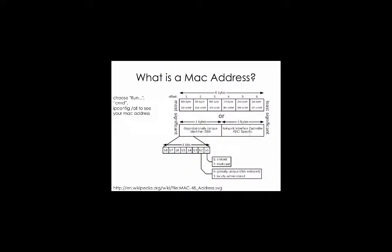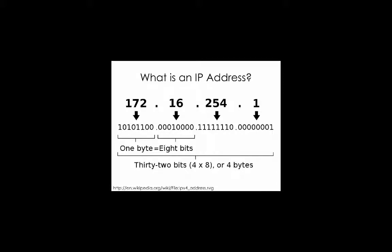Once you get on the internet, the question is how do we find each other? You'll have probably seen things called the MAC address — basically it's a marker for the physical hardware in your computer called the network card. But the internet, when it gets past the small local network, uses something called an IP address. You'll see that here in the number 172.16.254.1 — it's a scheme that allows you to go anywhere on the internet.